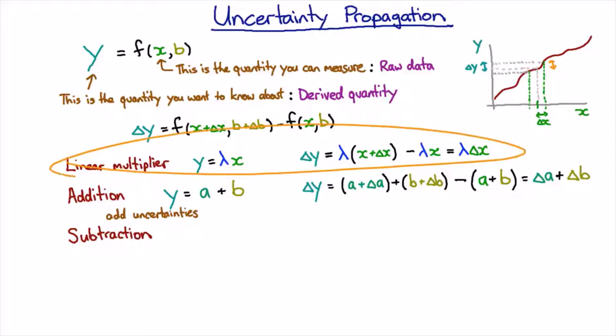So back up here with the linear multiplier, what if our multiplier wasn't 10 but it was minus 10? Would we expect our uncertainty to go negative? What does a negative uncertainty even mean?